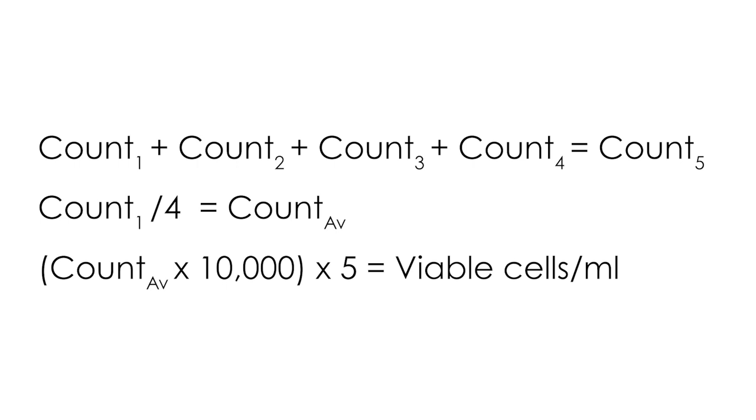For example, if your viable cell count is 200,000 cells per milliliter in a volume of 20 milliliters and you want to seed 10,000 cells into the new flask, then you need to transfer 1 milliliter of your cell suspension into the new flask.